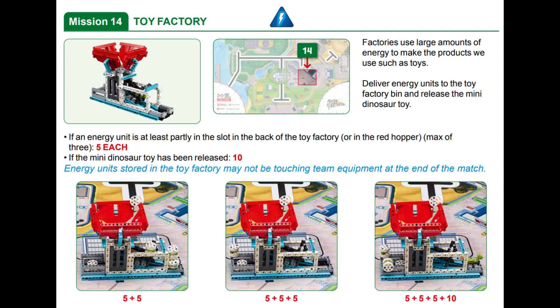In this mission points are awarded for up to three energy units that are either partially in the back slot or the red hopper of the toy factory at the end of the match. You also earn points when the small dinosaur toy has rolled down the ramp in the mission model.